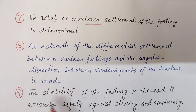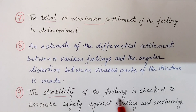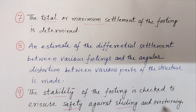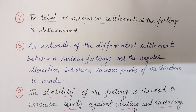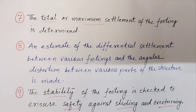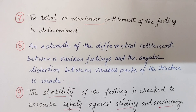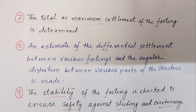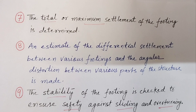The stability of the footing is checked to ensure safety against sliding and overturning. The factor of safety should not be less than 1.75 against sliding and not less than 2 against overturning, when only dead load, live load, and earth pressure are considered.